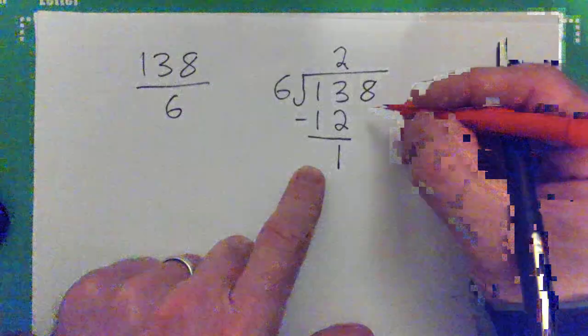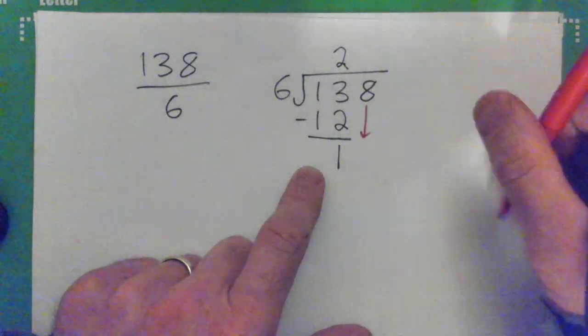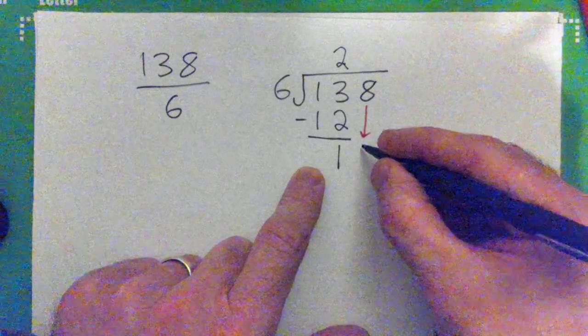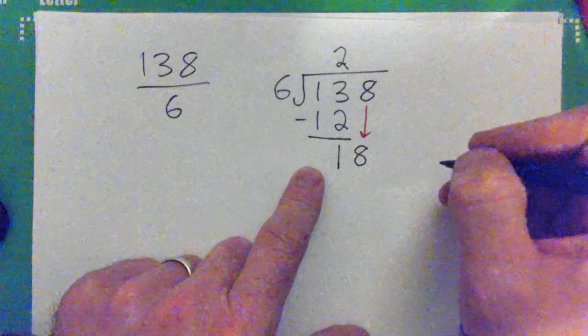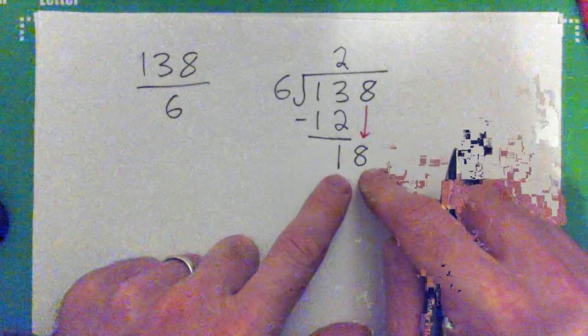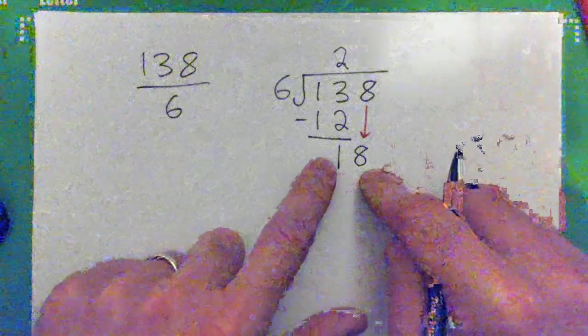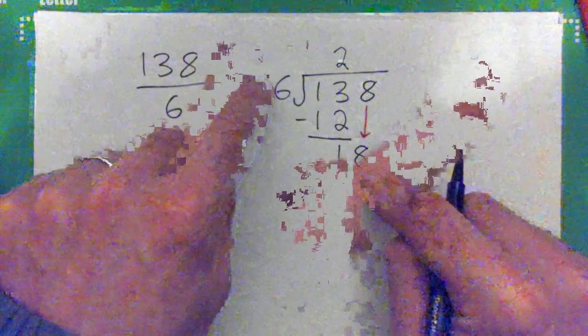And the next step is you take this number, you bring it down. And you write that there. Yep, and that's 18. You got that? Okay, and then you start over, only it's 6 into 18.